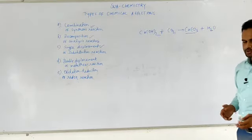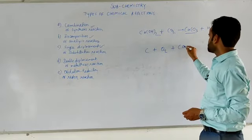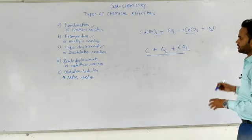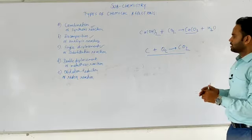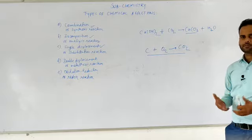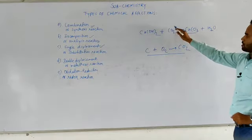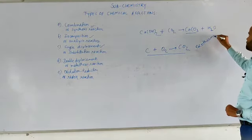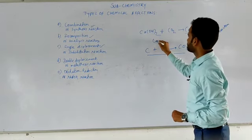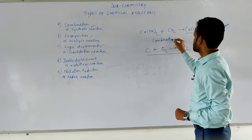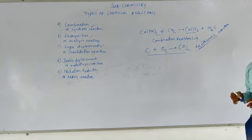One more thing we can notice: in combination reactions like burning of coal — C plus O2 equals CO2 — heat is evolved along with the formation of the products. Because heat is evolved along with the formation of the product, combination reactions are generally exothermic in nature.